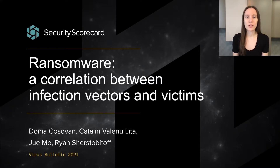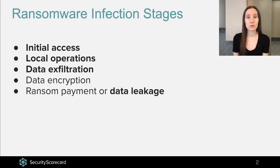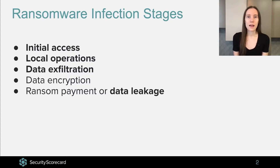Usually, a ransomware infection consists of five stages. The first stage is gaining initial access to the system or network in which the threat actor is interested. After gaining this foothold, the threat actor performs various local operations such as credential stealing, privilege escalation, or lateral movement.